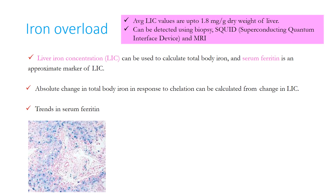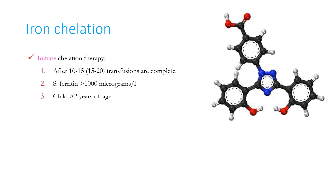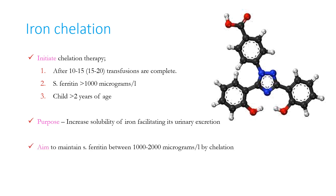The average LIC value is 1.8 mg per gram dry weight of liver, and LIC can be detected using biopsy, superconducting quantum interference device (SQUID), or MRI. Chelation therapy should be initiated after 10–15 transfusions (Indian studies suggest 15–20), when serum ferritin is more than 1000 micrograms per liter, and in a child more than 2 years of age. The purpose is to increase solubility of iron, facilitating its urinary excretion, aiming to maintain serum ferritin between 1000–2000 micrograms per liter.